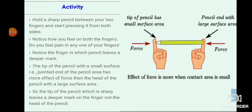From this activity it is clear that the tip of the pencil has a sharp, small area, so the left finger feels more pressure. The right finger, where the end of the pencil is blunt, has a large surface area and feels less pressure. The sharp tip leaves a deeper mark, not the blunt head.